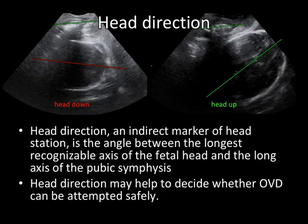Head direction is an indirect marker of head station and it is the angle between the longest recognizable axis of the fetal head and the long axis of the pubic symphysis. It is classified as head down, shown on the top left; head up, shown on the top right; or horizontal. Head direction may help to decide whether operative vaginal delivery can be attempted safely.